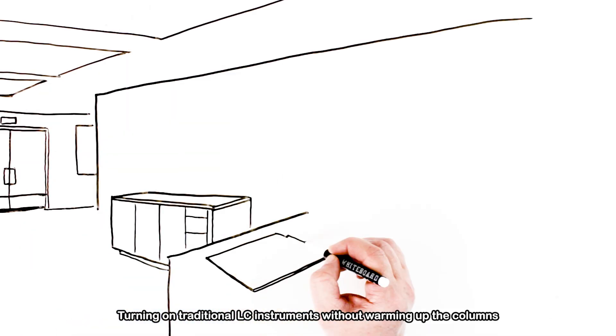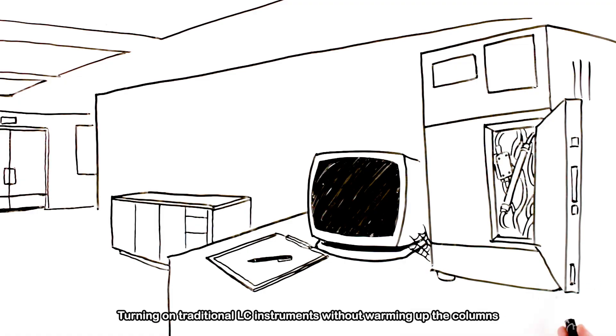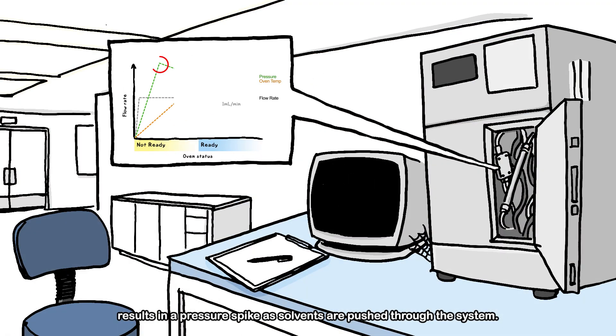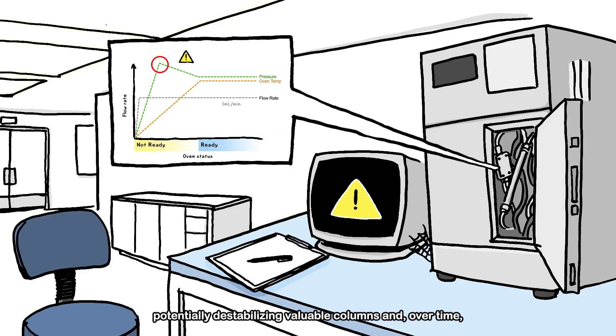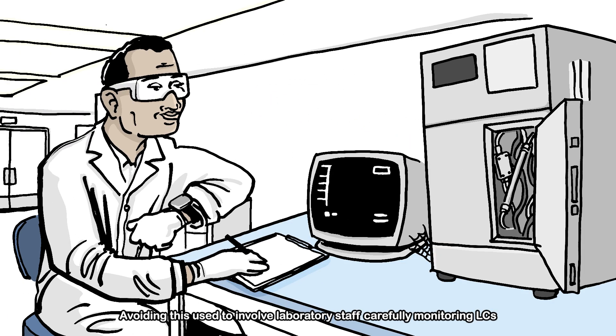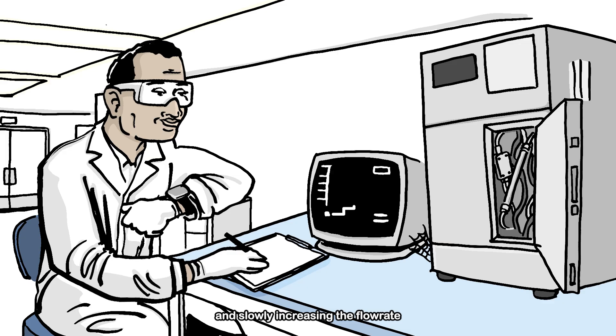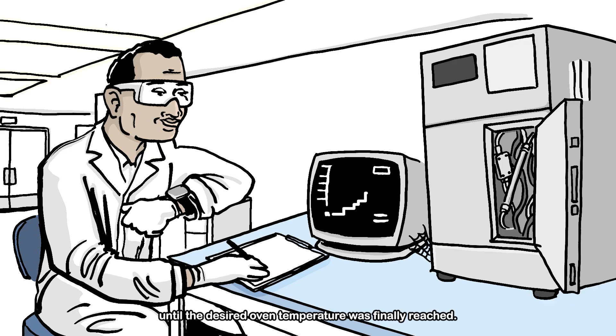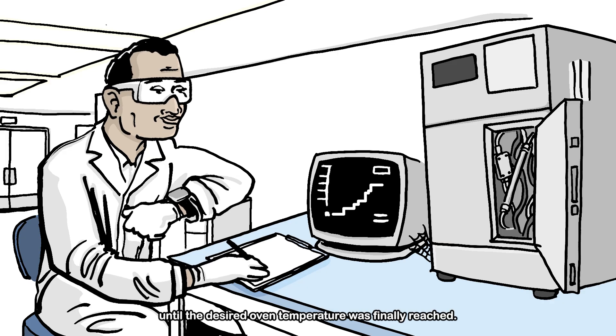Turning on traditional LC instruments without warming up the columns results in a pressure spike as solvents are pushed through the system. This can lead to pressure shock, potentially destabilizing valuable columns and, over time, lowering data quality and shortening the column life. Avoiding this used to involve laboratory staff carefully monitoring LCs and slowly increasing the flow rate until the desired oven temperature was finally reached.